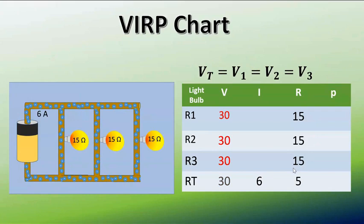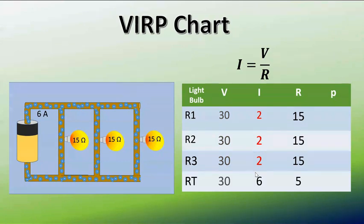Now we can find the current in all three of the light bulbs because we know the voltage and we know the resistance. So if we know two out of the three, we can always find the third using Ohm's law, and that would be voltage divided by the resistance. We just do that for all three of the light bulbs and we get 2 in each case.